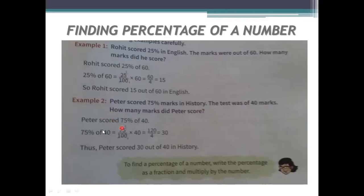75 percent of 40 means 75 by 100 times 40. Simplifying: 15 fives are 75 and 15 fours give 60 — wait, 15 threes are 75 over 15 fours are 100, so this becomes 3 by 4 times 40. That gives 40 times 3 by 4, which is 120 by 4, equals 30. So Peter scored 30 out of 40 in history.